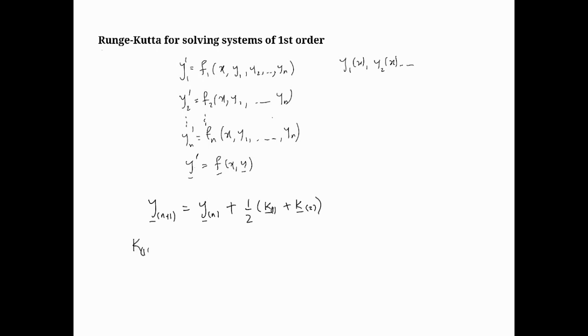If we want to apply the Runge-Kutta to this, I'm going to first look at the second order. This would be the second order Runge-Kutta applied to this system of equations. So it would be the usual, but this time it's a vector y_{n+1} equals y_n plus half into the vector k1 plus the vector k2.